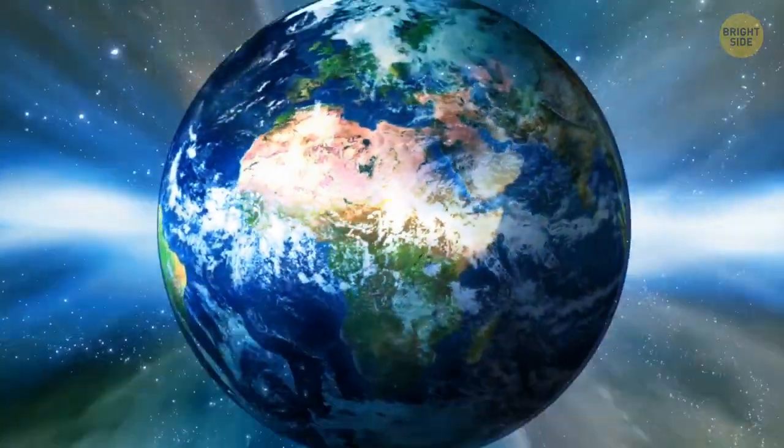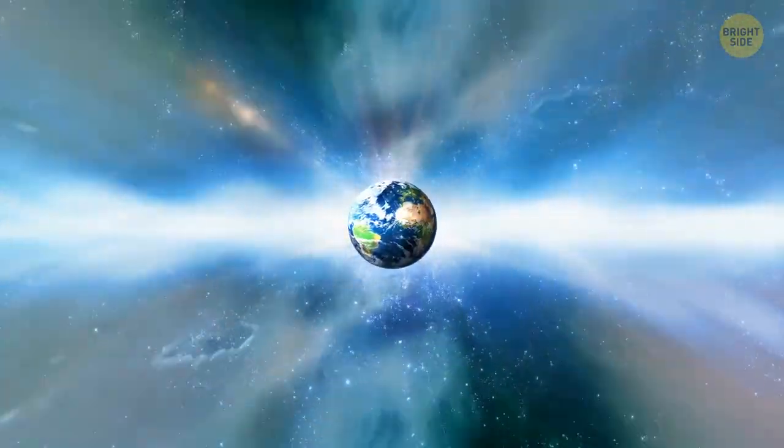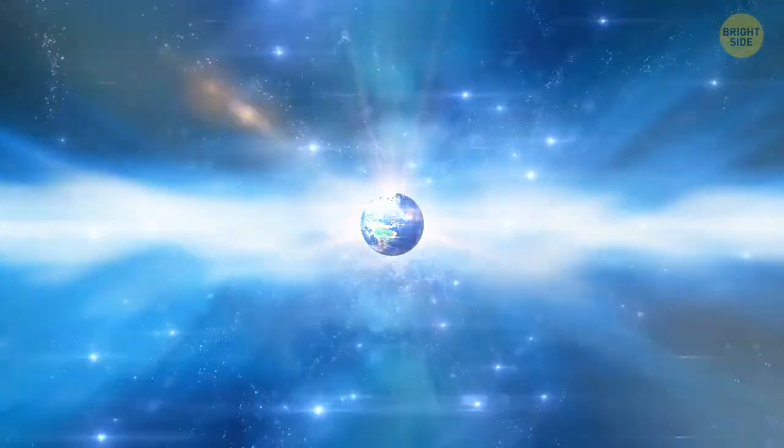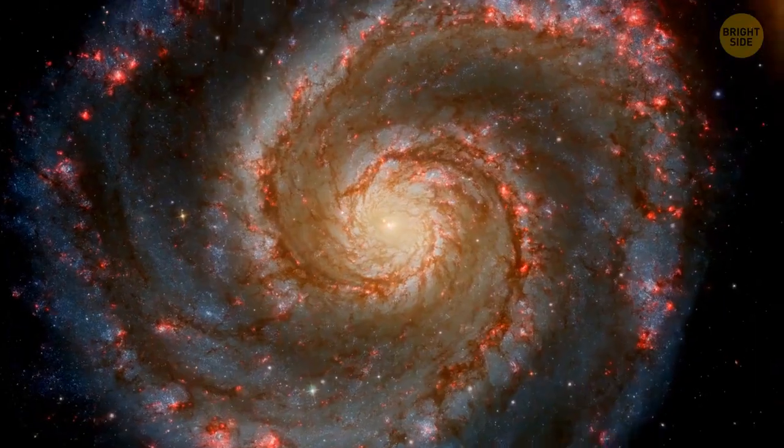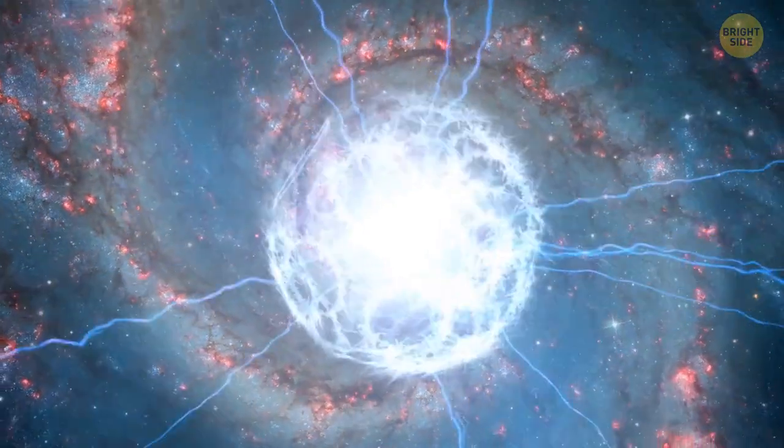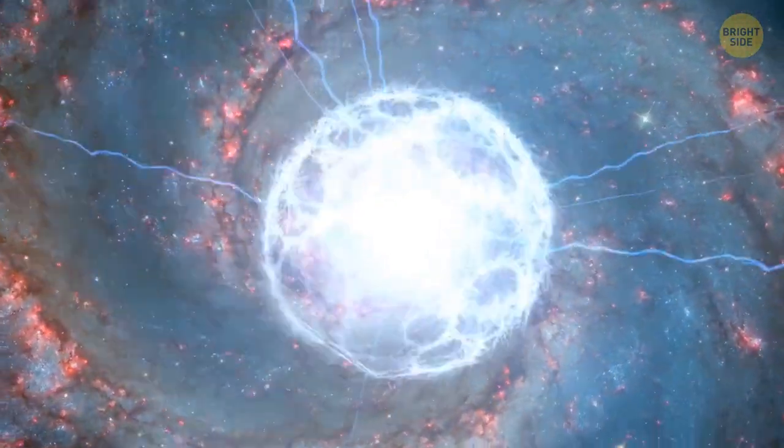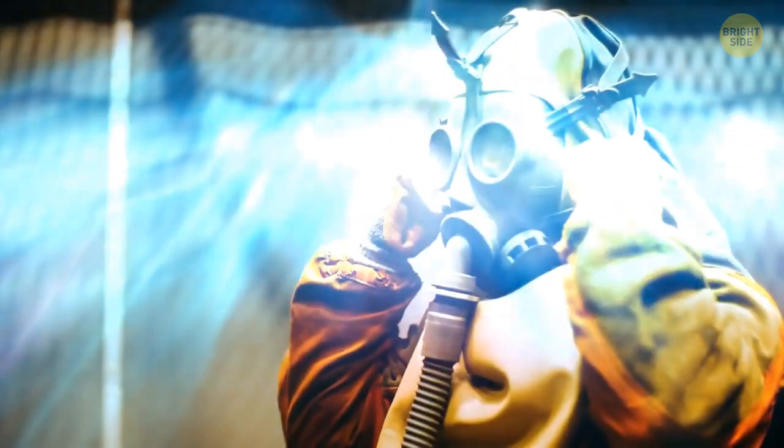So, if the Earth were located somewhere closer to the center of the Milky Way galaxy, it would be a very different place. Let's take a look at some of the potential effects. First of all, radiation. As we mentioned earlier, the center of the Milky Way is one of the most radiation-dense regions in the galaxy. It would make life on Earth very challenging, if not impossible.